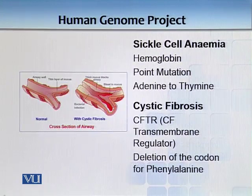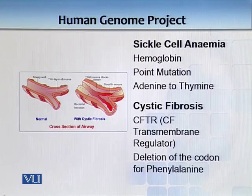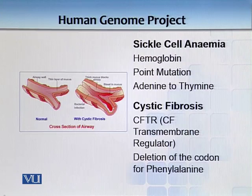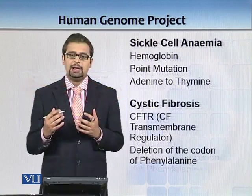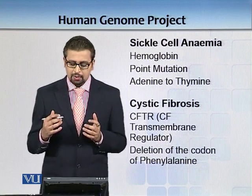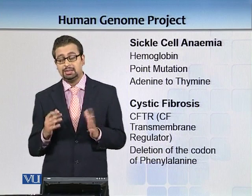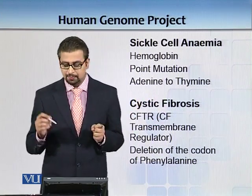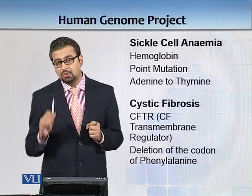Diseases like cystic fibrosis involve a sodium pump — a transmembrane regulator, a sodium ion channel — that is affected because of the deletion of the codon for phenylalanine. A huge mucus buildup develops in the patient's air passages, blocking the airway and giving opportunity for various bacterial infections to develop. Due to those infections the patient suffers, and ultimately this can lead to pancreatitis and other complications. It took 10 years to identify those genes.